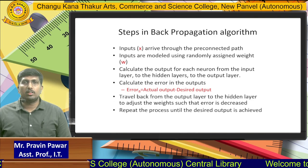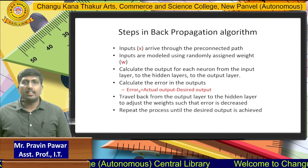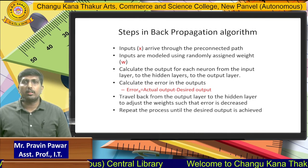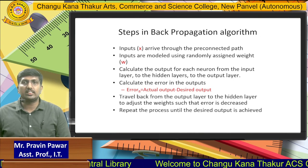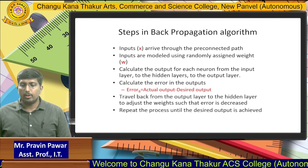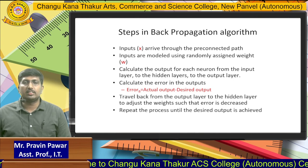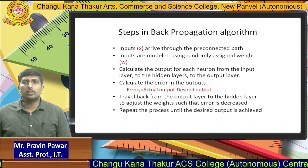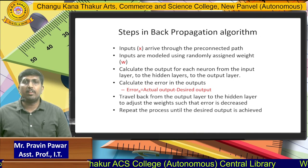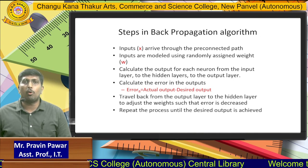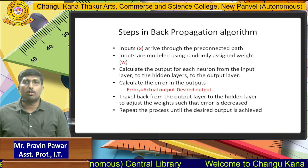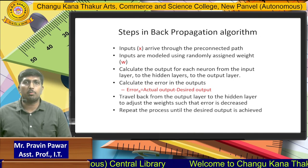Steps in the backpropagation algorithm: First, the input x arrives through the pre-connection path of the input. The inputs are then modeled using randomly assigned weights. We provide the input x and, to send it towards the next point in the network, we require the weights of those particular inputs.